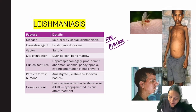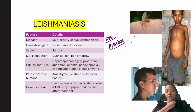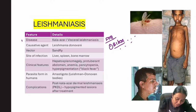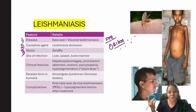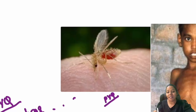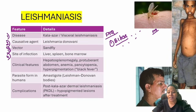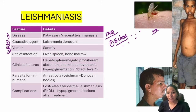Leishmaniasis is also called kala-azar or visceral leishmaniasis. In PYQs, the first clue is that the patient is from Bihar. The causative agent is Leishmania donovani. The vector is the sand fly — they may show an image of the sand fly and ask you to identify it, which is PYQ number two. The site of infection includes the liver, spleen, and bone marrow.